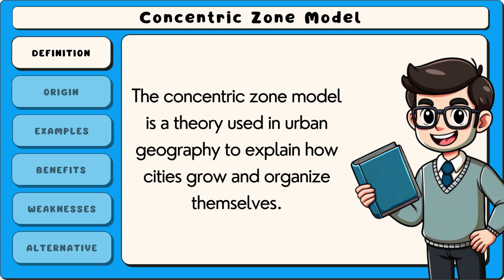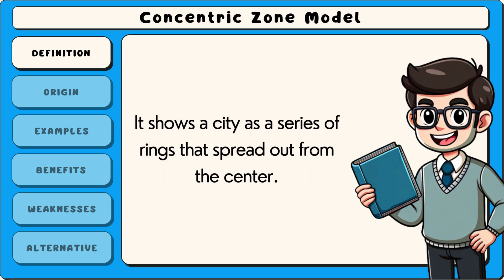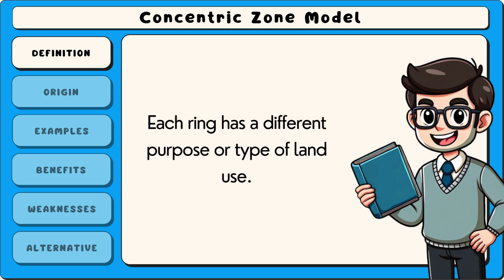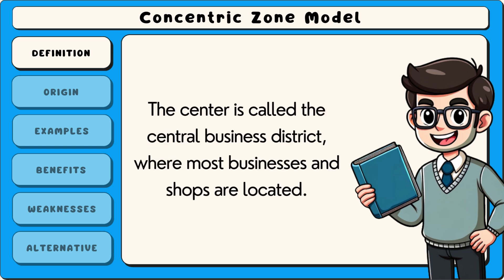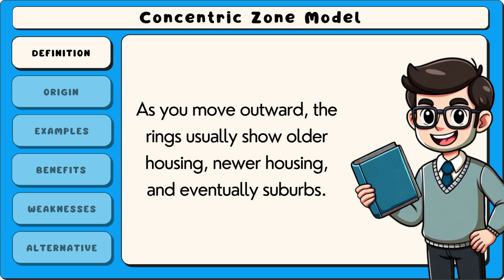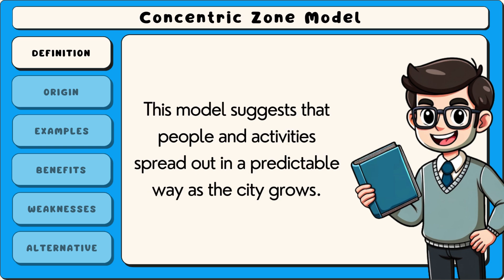The concentric zone model is a theory used in urban geography to explain how cities grow and organise themselves. It shows a city as a series of rings that spread out from the centre. Each ring has a different purpose or type of land use. The centre is called the central business district, where most businesses and shops are located. As you move outward, the rings usually show older housing, newer housing and eventually suburbs. This model suggests that people and activities spread out in a predictable way as the city grows.